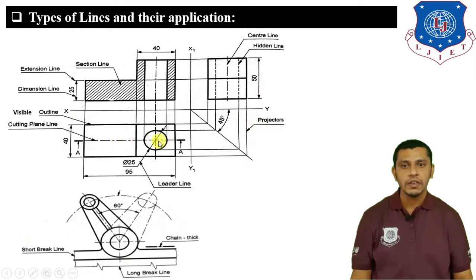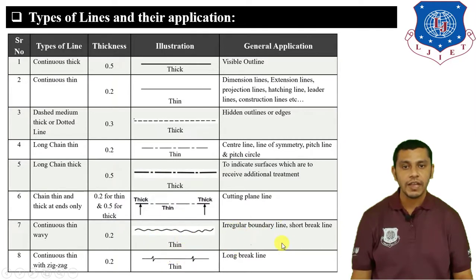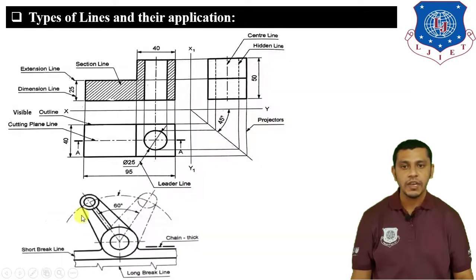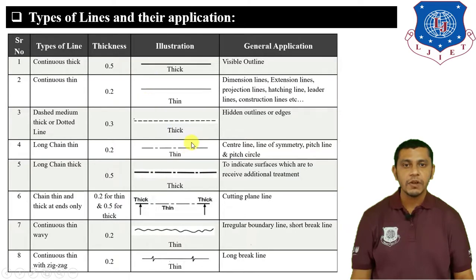Next are continuous thin wavy and continuous thin zigzag lines — both are 0.2 mm in thickness. The wavy line is in wave form (thin shade) and the zigzag line is in zigzag form (also thin shade). The wavy line is used to show irregular boundary surfaces and short break lines, whereas the zigzag line is used to show long break lines. For example, to show a shorter break in an object (like a part of a machine), we use the short break (wavy) line; for a long break, we use the zigzag line.